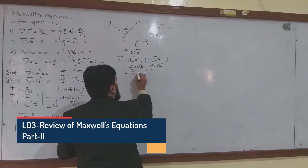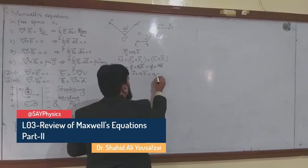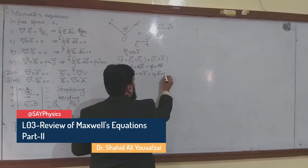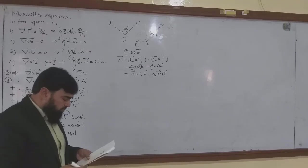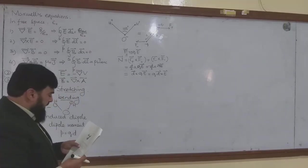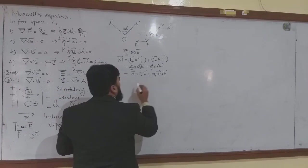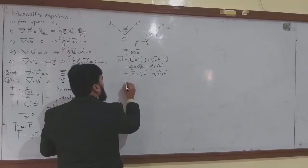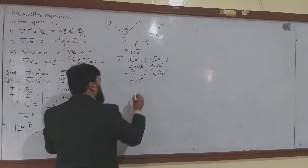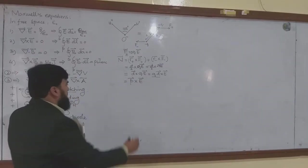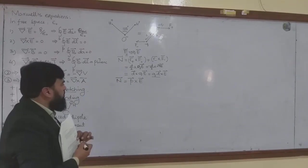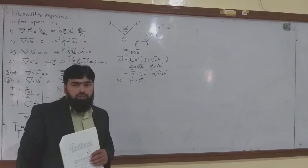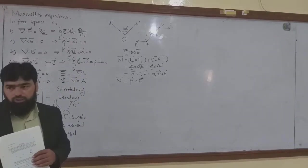I can write this as Q times D cross E, because Q is a scalar I can move it. I have defined the dipole moment as equal to QD, so I can write this as the dipole moment cross E. The total torque will be equal to the cross product of the dipole moment P and E.